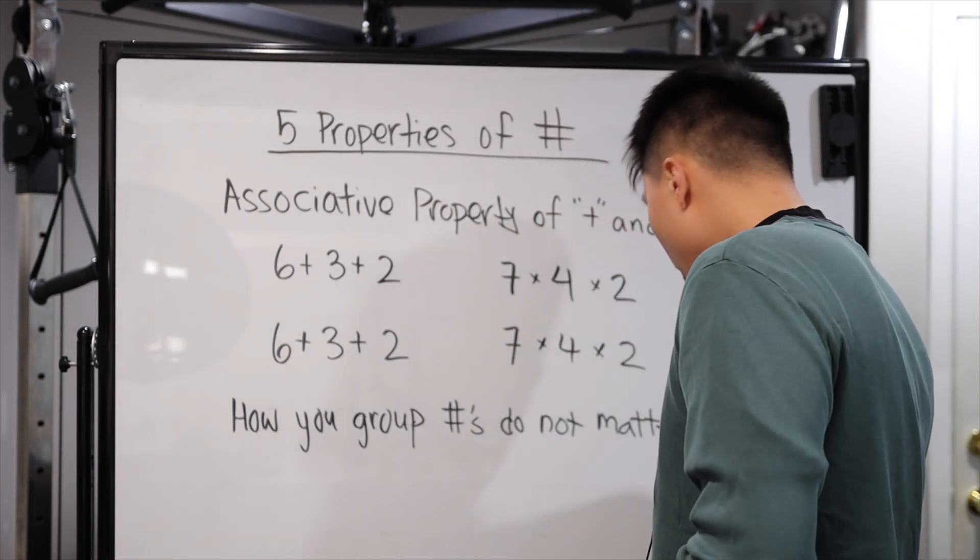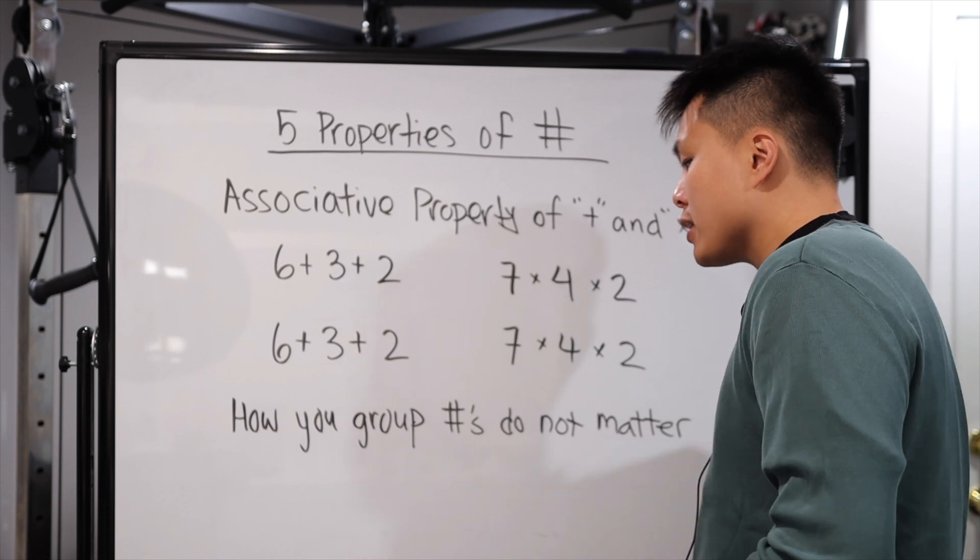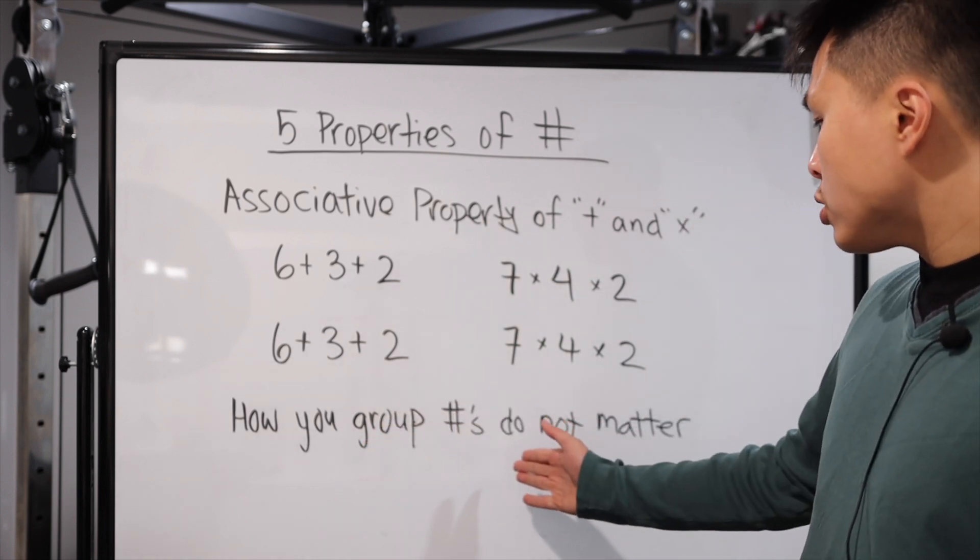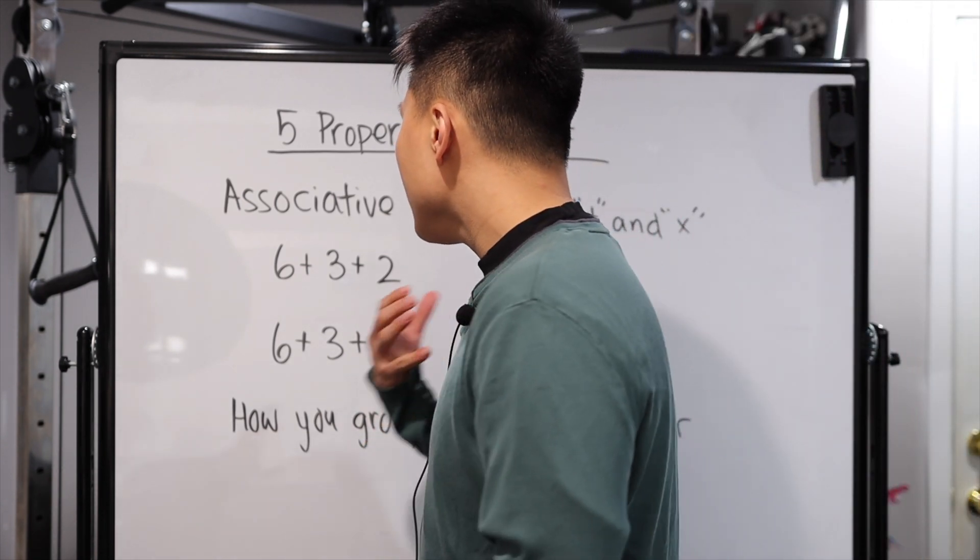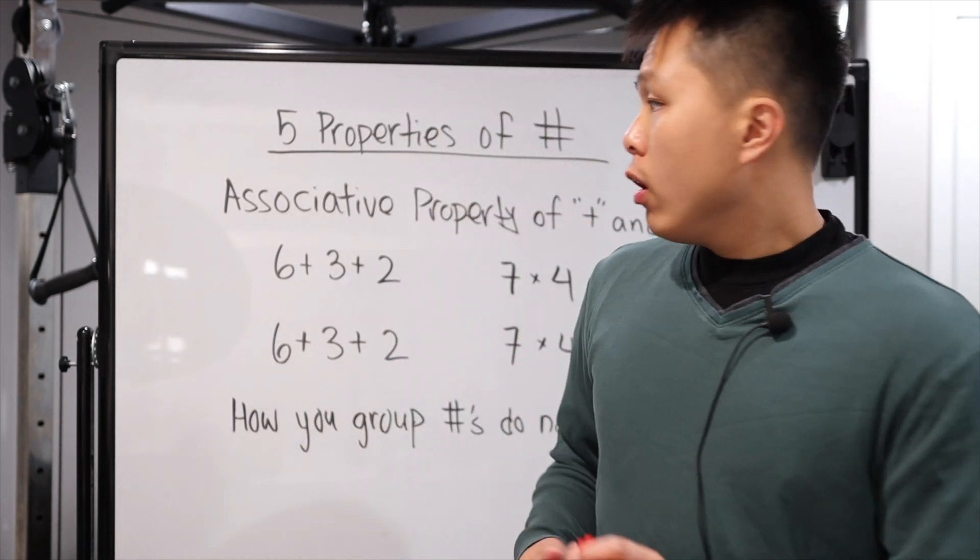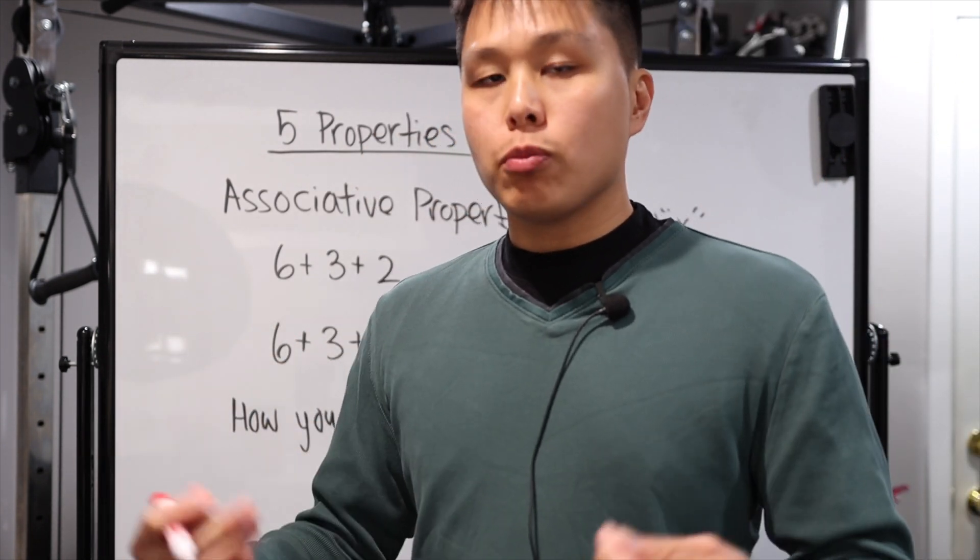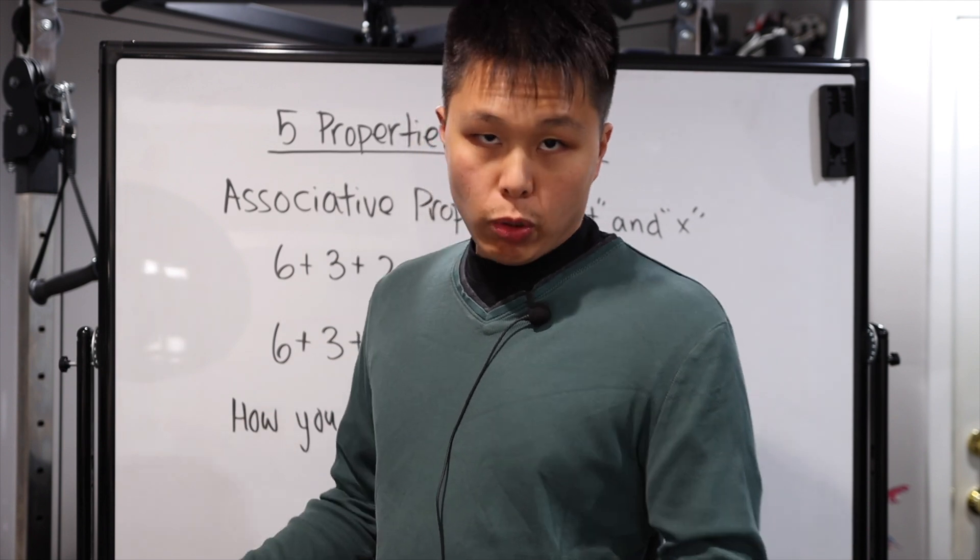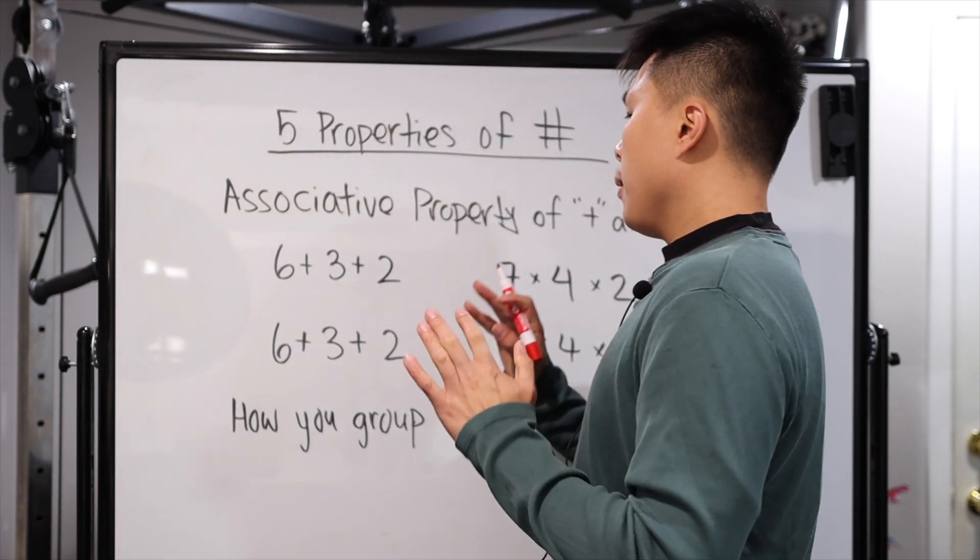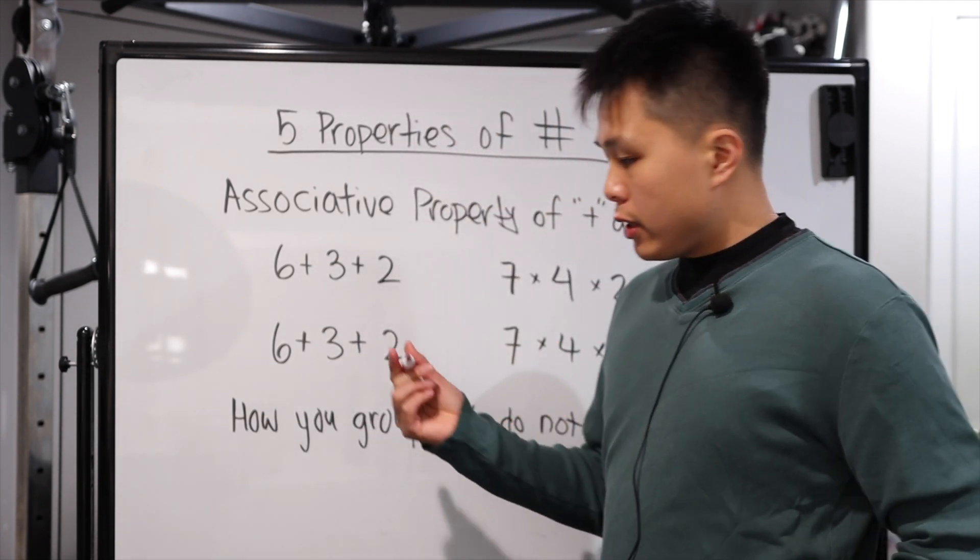Fairly simple. What associative property means is basically how you group the numbers does not matter. It does not matter in any way, shape, or form. Now, we are familiar with PEMDAS and what to add, subtract, multiply, divide, so on so forth first, right? But what this is saying is fairly simple.